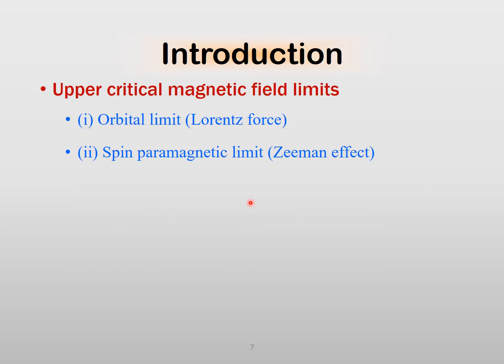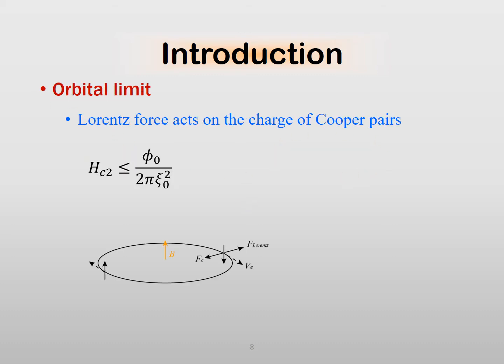A strong magnetic field can suppress superconductivity. There are two upper critical magnetic field limits. The first one is the orbital limit and the second one is the spin paramagnetic limit, the Pauli limit, which is related to the Zeeman effect. The orbital limit is determined by the Lorentz force acting on the Cooper pair. In this case, we can measure HC2 in the orbital limit. As shown in this figure, the magnetic field is perpendicular to the plane of the 2D system.